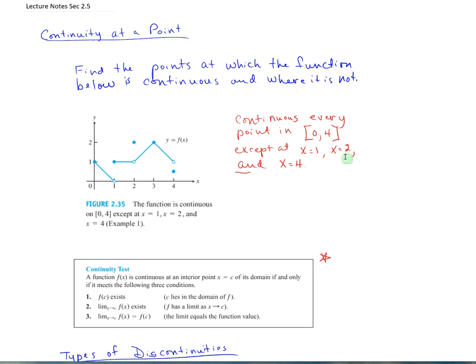If you were asked to find the points at which this function is continuous and where it is not, we see it's broken with pieces and holes. From 0 to 4, it is continuous at every point except at x equals 1, x equals 2, and x equals 4. Everywhere else, it is continuous.